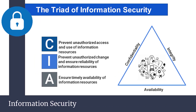When we think about information security, you can break it down into what we call the triad of information security. This includes confidentiality, integrity, and availability — or CIA. With confidentiality, we seek to prevent unauthorized access to the use of information resources. Integrity means we want to maintain the integrity of our information, prevent unauthorized changes, and ensure the reliability of information resources. Availability ensures that timely access is available for the appropriate people when needed. Threat actors want to breach confidentiality, disrupt integrity and resources, and alter availability. We will talk more about the methods they use, such as social engineering, phishing, and ransomware, later in a future video.